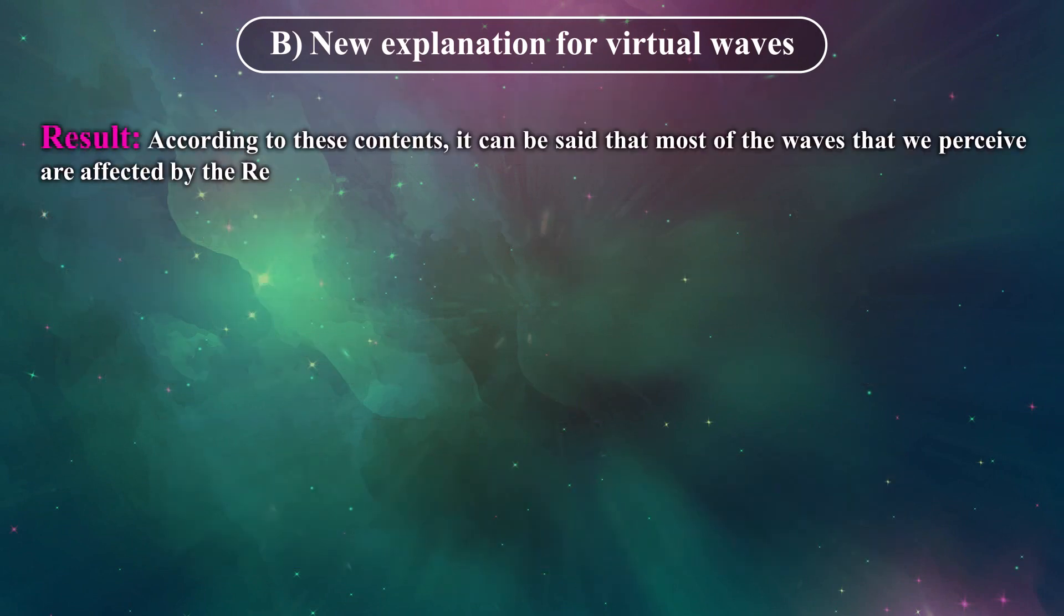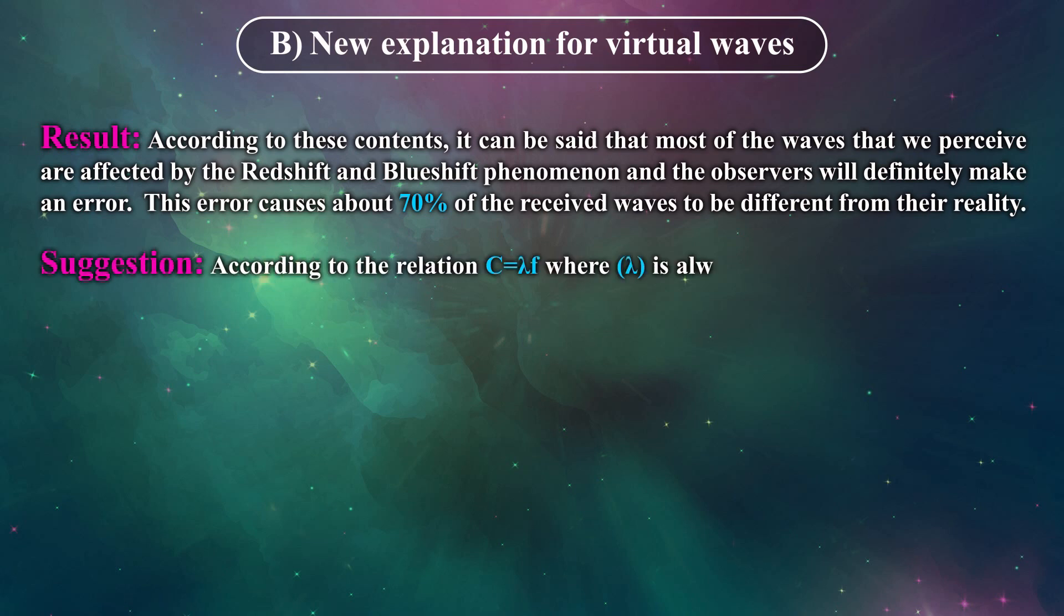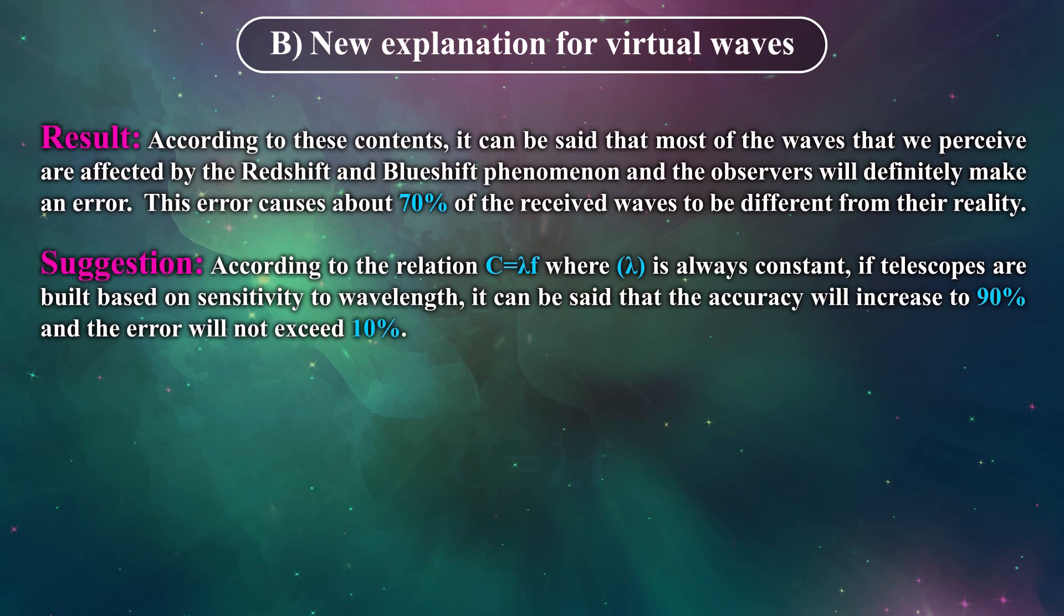Result: According to these contents, it can be said that most of the waves that we perceive are affected by the redshift and blueshift phenomenon and the observers will definitely make an error. This error causes about 70% of the received waves to be different from their reality. Suggestion: According to the relation C equals lambda f where lambda is always constant, if telescopes are built based on sensitivity to wavelengths, it can be said that the accuracy will increase to 90% and the error will not exceed 10%.